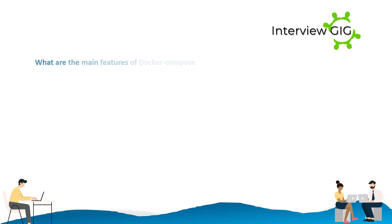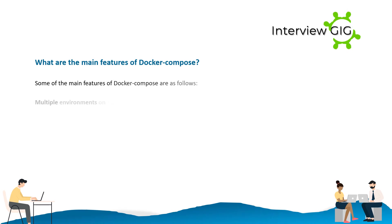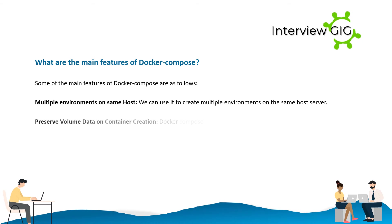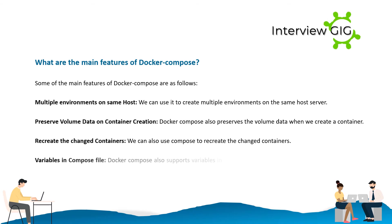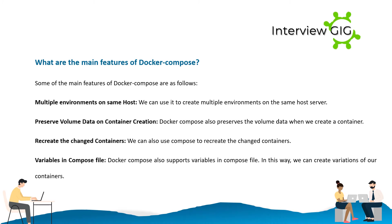What are the main features of Docker Compose? Multiple environments on the same host — we can use it to create multiple environments on the same host server. Preserve volume data on container creation — Docker Compose also preserves the volume data when we create a container. Recreate the changed containers — we can also use Compose to recreate the changed containers. Variables in compose file — Docker Compose also supports variables in the compose file, allowing us to create variations of our containers.